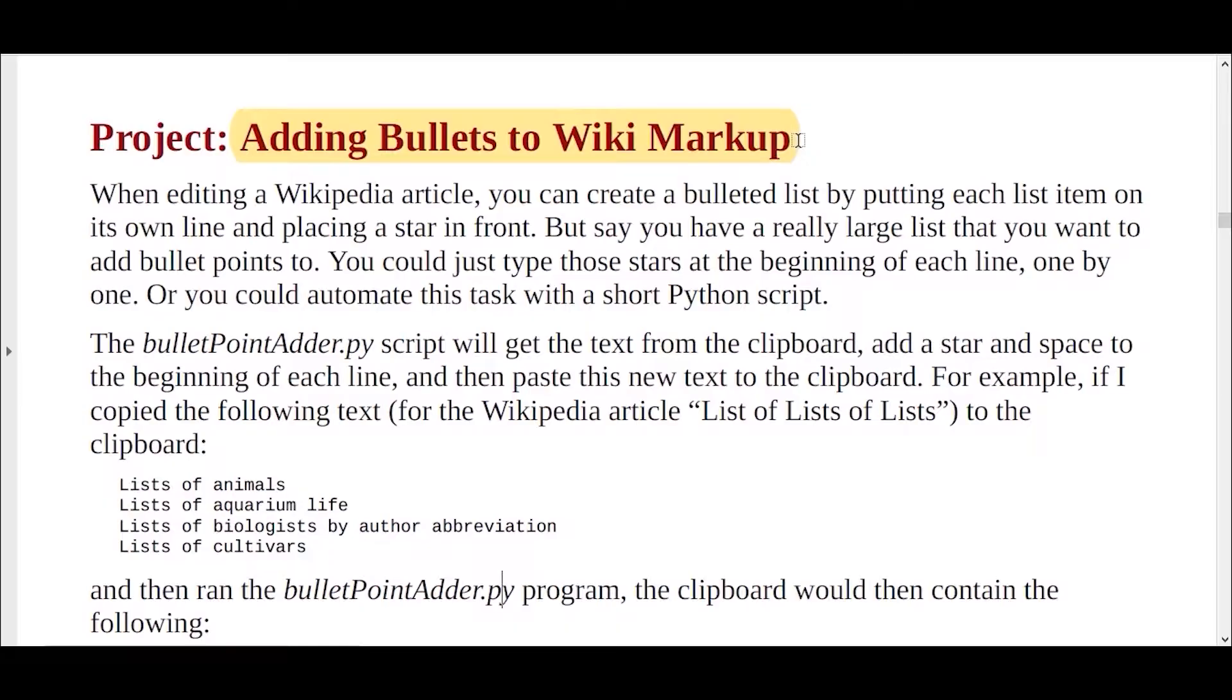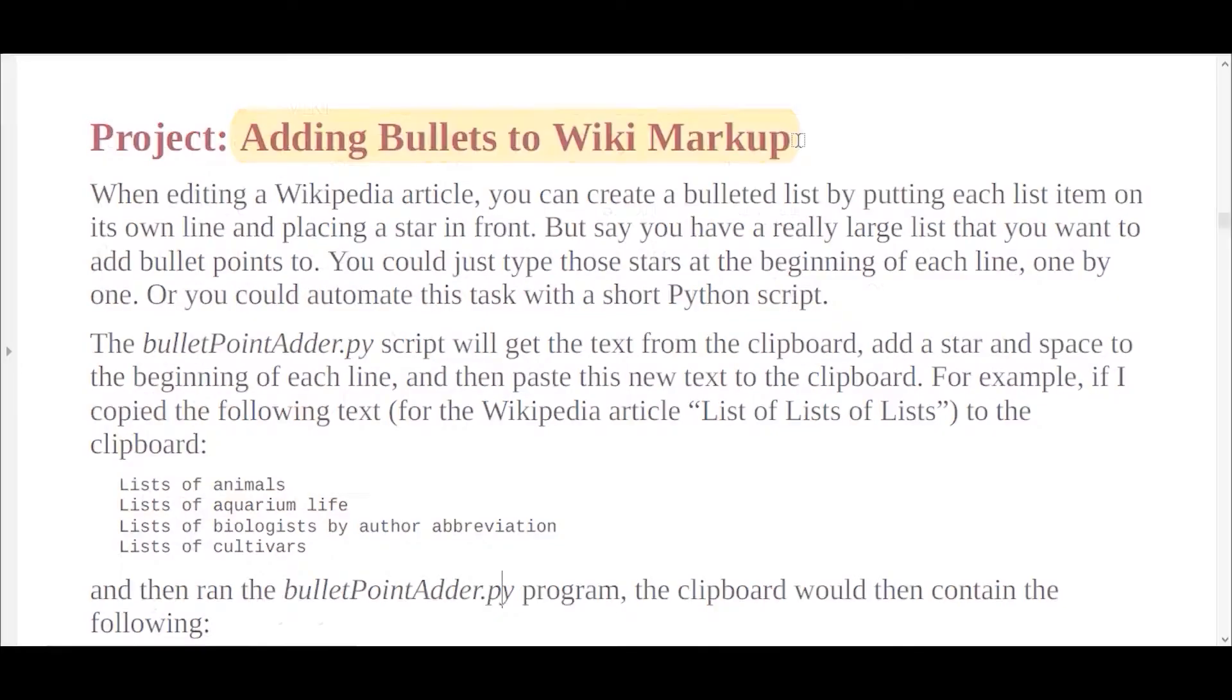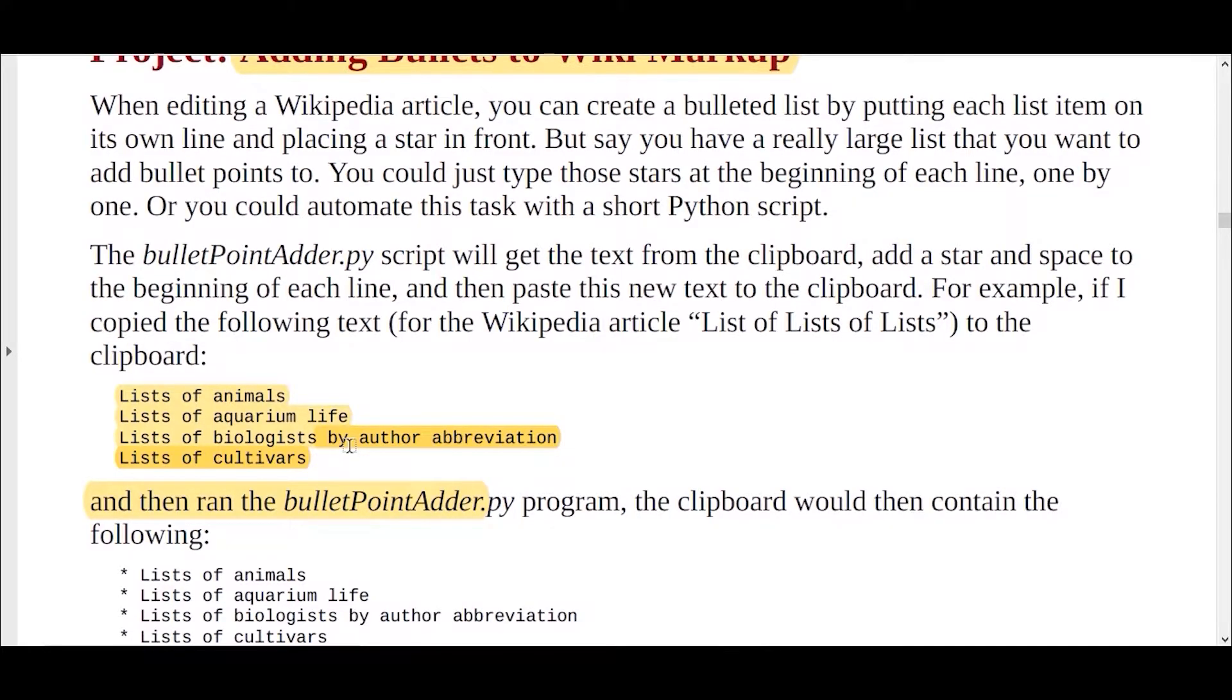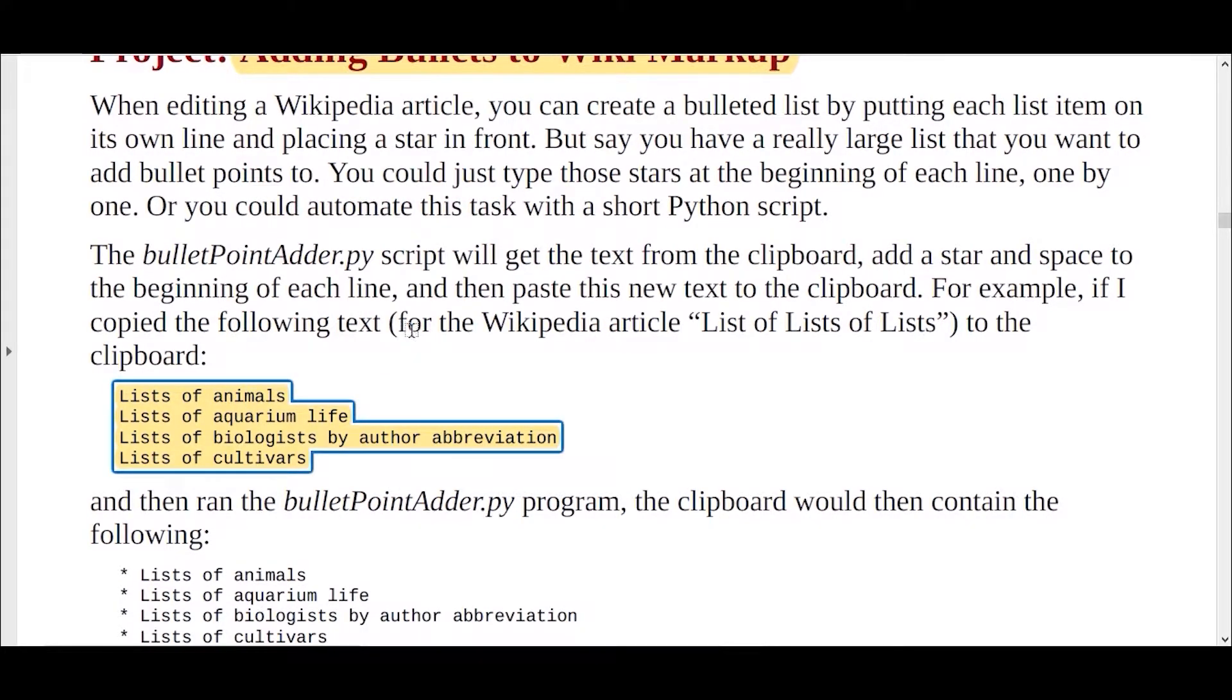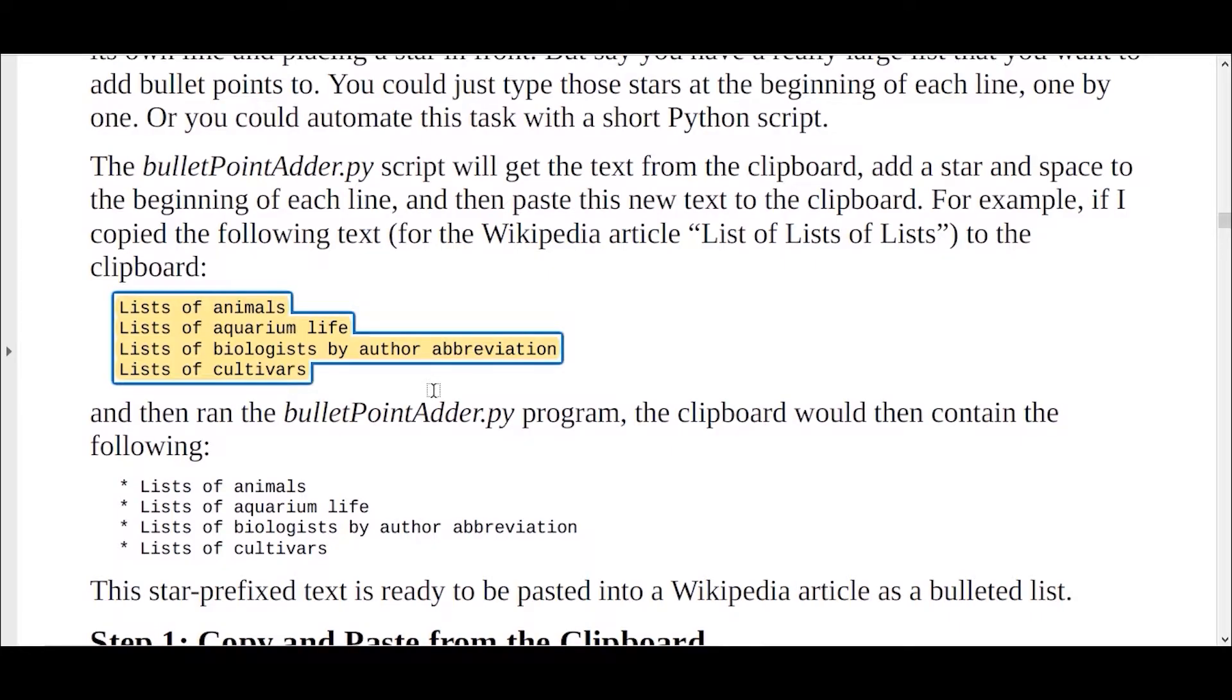What this actually means is, what our program should do. I will tell you by showing this example. Here you can see that I have certain lines of sentences here: list of animals, list of aquarium life, list of biologists by author abbreviation, and list of cultivators. What I want to do is, I want to copy this thing into my notepad and then when I run my program, it should add a bullet in front of all the lines here. You can see that every line here has a bullet. I want this to be done automatically by my program. So, now the question comes, how do we do this?